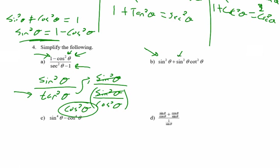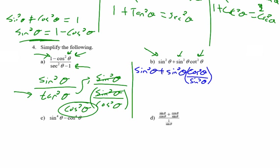For the next expression, I'll replace cot²θ in terms of sine and cosine. So sin²θ + sin²θ × (cos²θ/sin²θ). The sin²θ's cancel, leaving sin²θ + cos²θ. And sin²θ + cos²θ = 1, right from the original identity. You need to start getting good at recognizing that when you see it — that's the name of the game with identities.